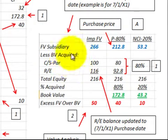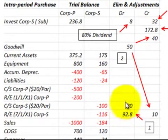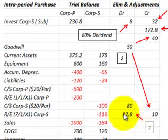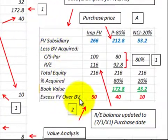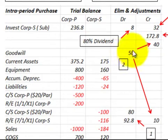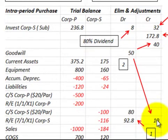Next, making our eliminations and adjustments starting with the distribution schedule. First, we eliminate 80% of the equity in the sub: $80,000 debits the common stock for the subsidiary, and $92,800 debits retained earnings for the subsidiary. The balancing amount of $172,800 reduces the investment account. Then dealing with the excesses — all based on goodwill — we debit the goodwill account for $50,000, credit the subsidiary investment account for $40,000, and credit retained earnings for the subsidiary for $10,000.